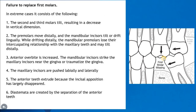Another important factor is failure to replace the first molar. In extreme cases: the second and third molars tilt, resulting in decreased vertical dimension; the premolars move distally and lose their intercuspation relationship with the maxillary teeth; there will be an increased anterior overbite where the mandibular incisors strike the maxillary incisors near the gingiva, traumatizing it; the maxillary incisors are pushed labially and laterally; the anterior teeth extrude as incisal opposition has largely disappeared; attrition occurs; and diastema are created by separation of the anterior teeth.